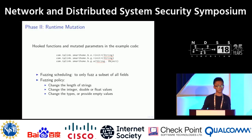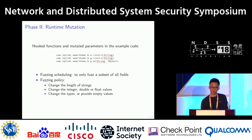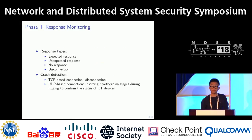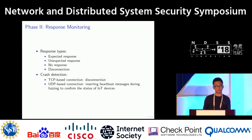Once we obtain the functions to hook, we mutate those function arguments. We schedule fuzzing by first controlling the maximum number of total mutation times, then randomly assigning mutation times to these locations. We mutate values using heuristics like changing the length of strings, changing integer, double, or float values, and changing types or providing empty values. Responses are categorized as expected, unexpected, no response — meaning a crash was triggered or the device processed the message locally — or disconnection for TCP-based connections.